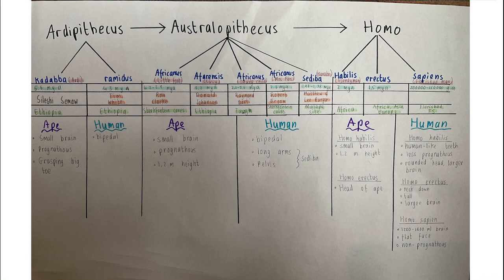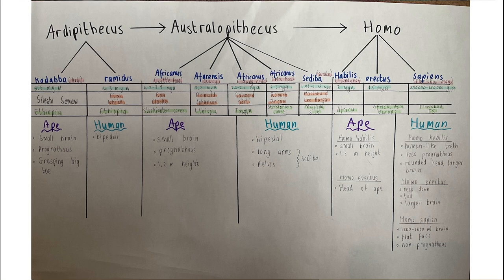Then Australopithecus sediba, or Karabo, thought to have lived 1.98 to 1.78 million years ago, discovered by Matthew and Lee Berger at the Malapa site. The ape-like features of Australopithecus include a small brain, prognathous features, and a height of about 1.2 metres. Human-like characteristics include bipedalism, long arms, and the pelvis shape — mostly characteristic of sediba or Karabo.